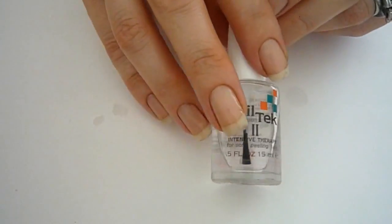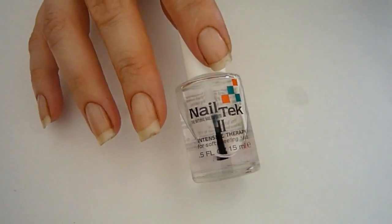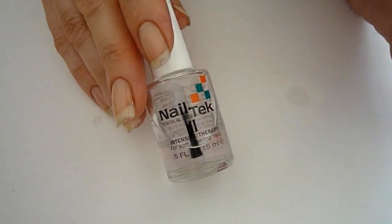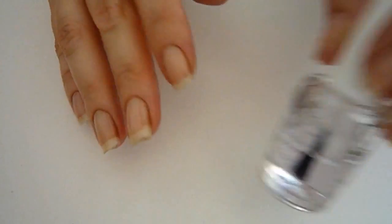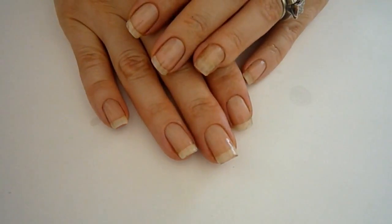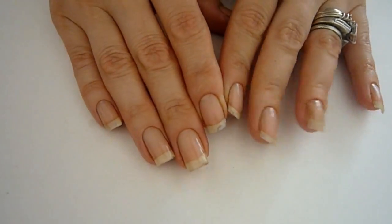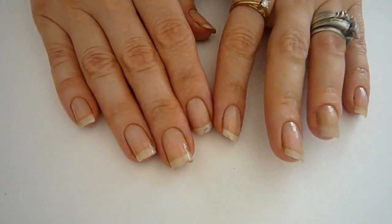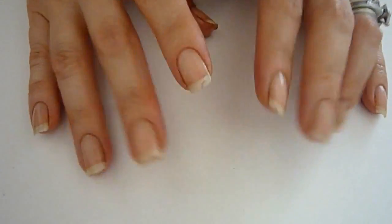You can do two coats of this or one and then go ahead and use your favorite nail polish or do your design. There you guys have it, or you can go back to your gel nails or whatever else that you would like to have on your nails. I hope that this has been very helpful and I will see you all in my next tutorial. Bye for now.